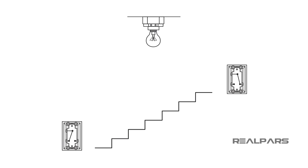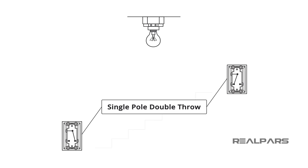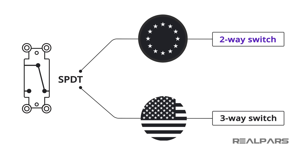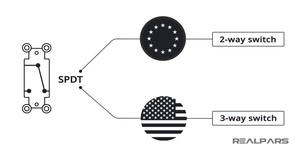Before we get started, we need to introduce you to some switch terms. If we are going to turn a light on and off from two different locations, we need two single-pole double-throw or SPDT switches. An SPDT is called a two-way switch in the European Union and a three-way switch in North America.